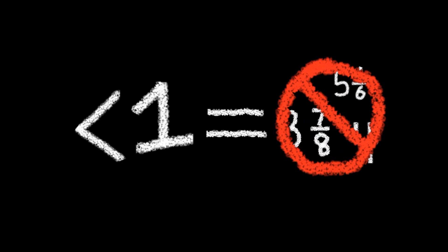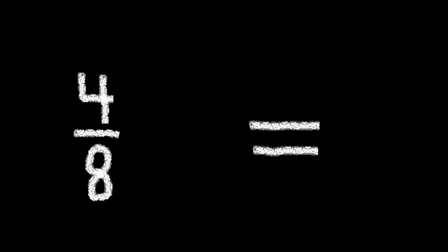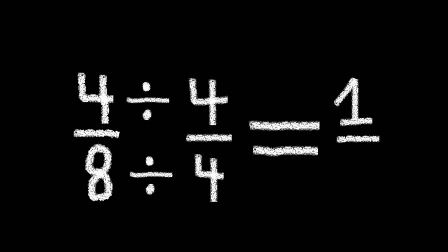Alternatively, you can simplify your fraction into a number with a lower denominator. Say we have the number 4 eighths. In order to simplify this fraction, we have to divide both the denominator and numerator by the same number. If we divide 4 by 4, we get 1. If we divide 8 by 4, we get 2. Therefore, 4 eighths equals 1 half.